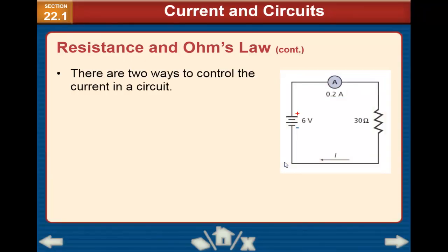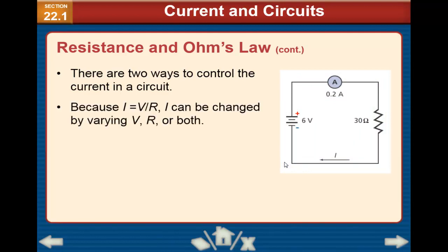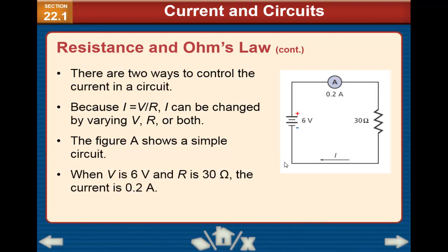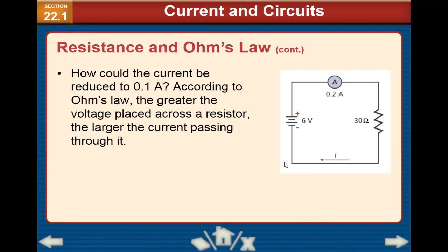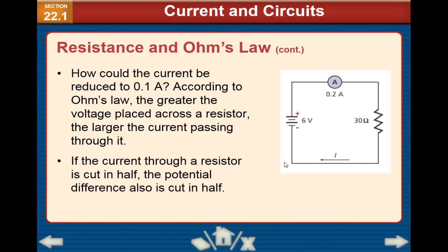There are two ways to control the current in the circuit. Because I equals V divided by R, the current can be changed by varying V or R. The figure shows a sample circuit where V is 6 volts and R is 30 ohms, giving a current of 0.2 amperes. According to Ohm's Law, the greater the voltage placed across the resistors, the larger the current passing through it. If the current through a resistor is cut in half, the potential difference is also cut in half.